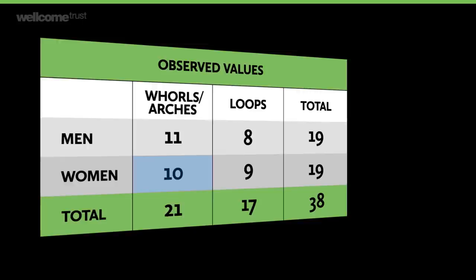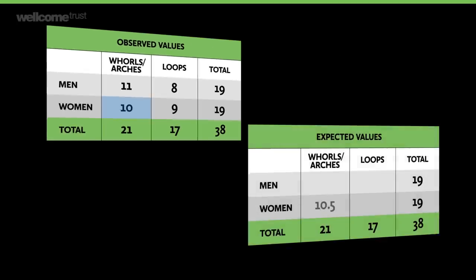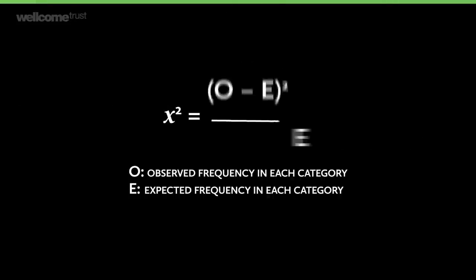To find out, we need to work out the expected value in each cell, which we get from multiplying the row total by the column total and dividing by the grand total. So for women with whorls, that would be 19 × 21 ÷ 38 = 10.5. These are the values that would be expected if the relative numbers of fingerprint type were exactly the same for both sexes. They are theoretical values and need not be whole numbers. Then we work out the chi-squared statistic using the formula.